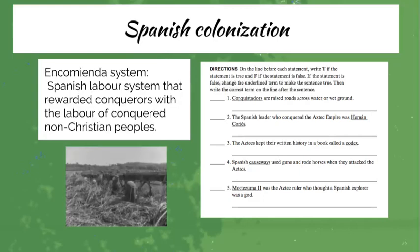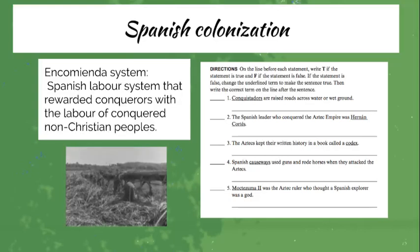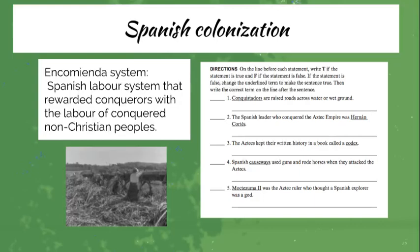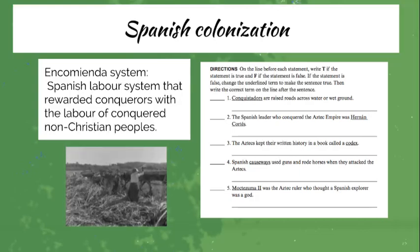Then we'll move on to Spanish colonization, focusing on the Encomienda system — the Spanish labor system that rewarded conquerors with the labor of conquered non-Christian people. We'll also be creating a cartoon or a diagram on Canva to show the structure and aspects of this system.